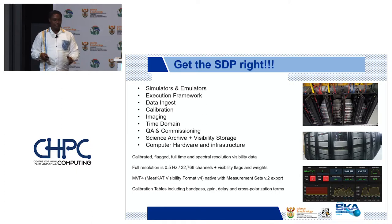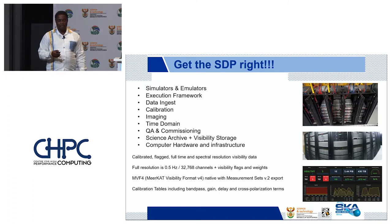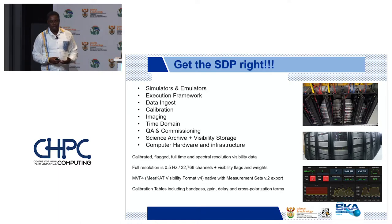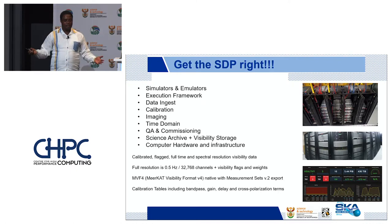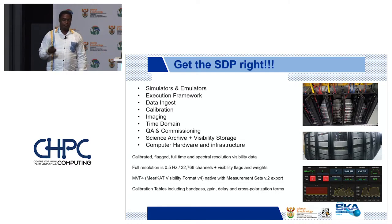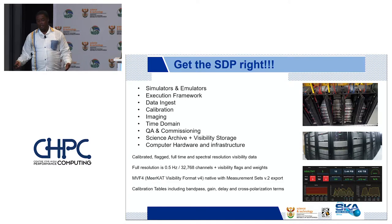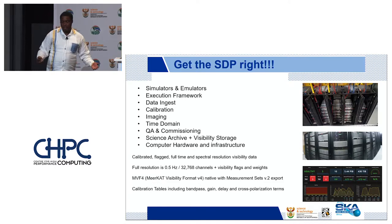We have a calibrator — we calibrate the telescope so we can provide the science community with quality data. We image. There's time domain — that's pulses, for those who know transient science. QA and commissioning: quality assurance and our ability to tell you the characteristics of the telescope at a given time during a specific observation — it changes all the time, affected by weather and other factors. The science archive and visibility storage means we store this data for future use, reuse, and processing — in partnership with the CHPC.